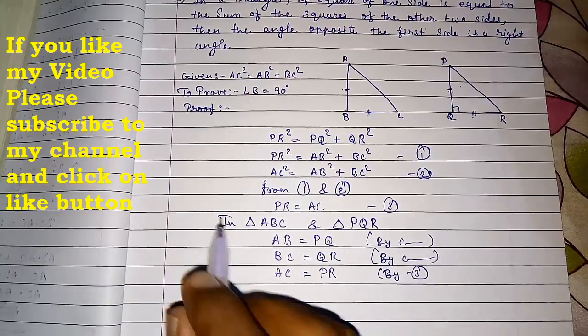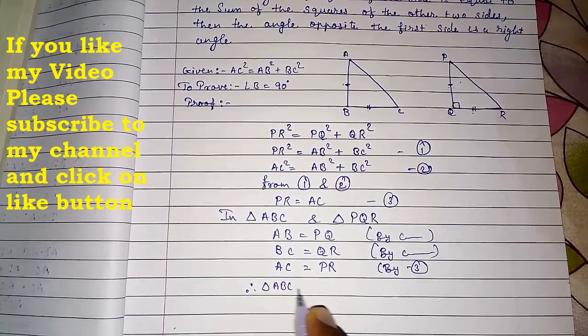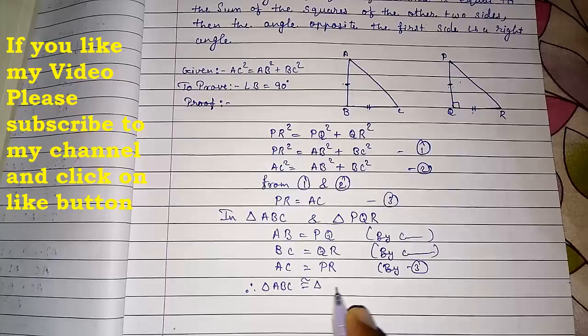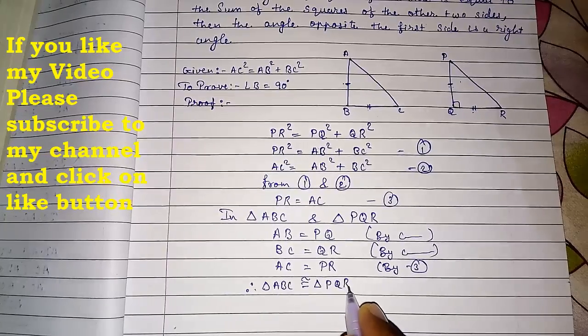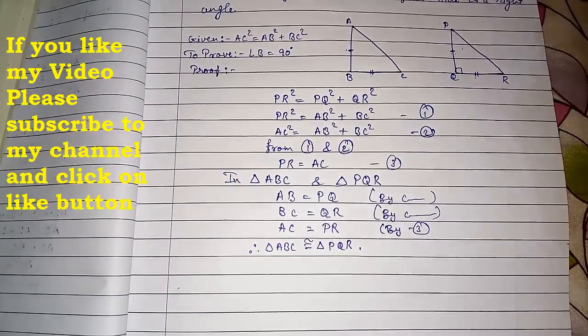So we can say these two triangles are congruent. Therefore triangle ABC is congruent to triangle PQR. So if they are congruent, all the parts and all the angles will be equal.